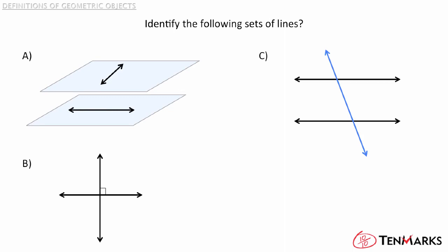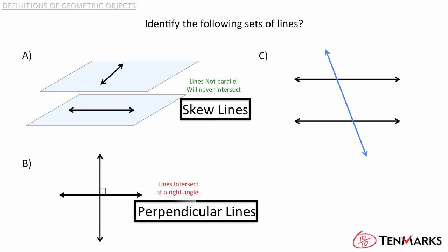Identify the following sets of lines. For part A, the lines are not parallel, but will never intersect. This means that they are skew lines. For part B, the lines intersect at right angles. So this means they are perpendicular lines. And for part C, the line crosses two other lines, which would make it a transversal.